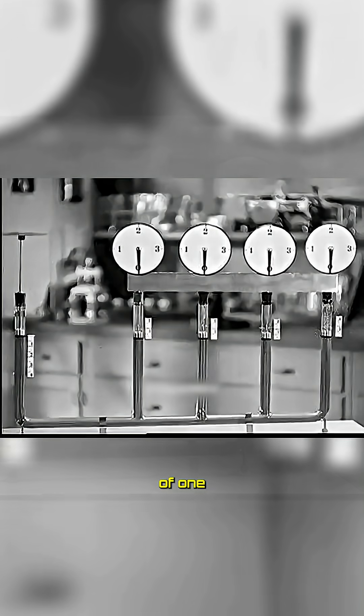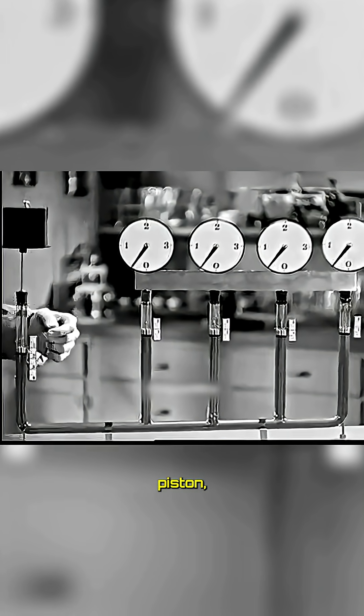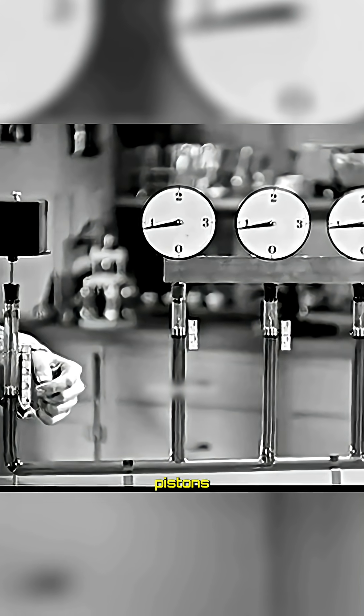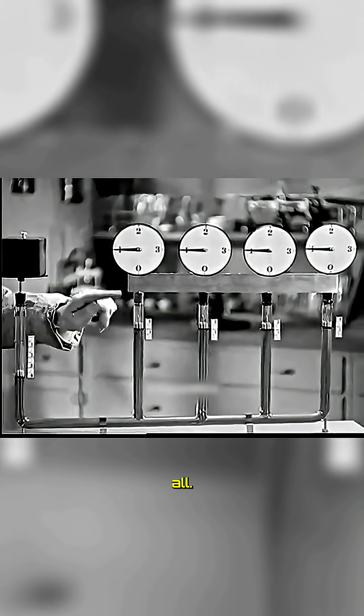Later, instead of one pipe, four pipes were joined together. When pressure was applied to the master piston, it moved four inches down and on the other side, the four pistons each moved one inch up, which meant the power was equally distributed among all.